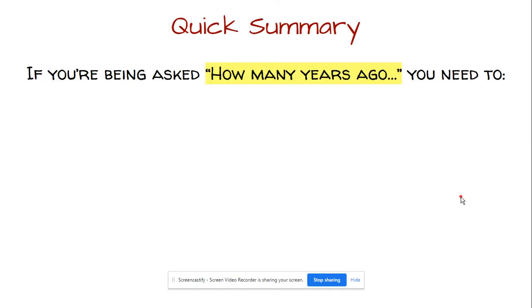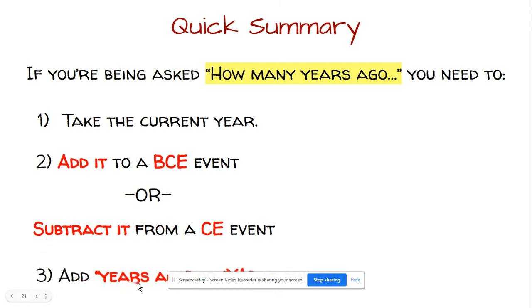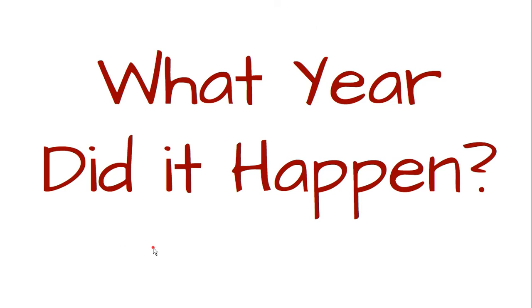Quick summary here. If you are being asked the question how many years ago, you need to do the following three steps. Number one, you start with the current year. I'm going to add it to the BCE event if I see a BCE event. However, if I see a CE event, I need to subtract. That's the big difference. BCE, I'm adding; CE, I'm subtracting. After that, I need to add in years ago or YA at the end of it. That's how I would find out how many years ago something happened.